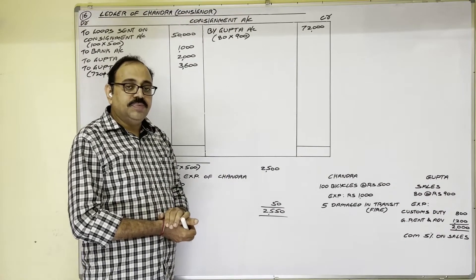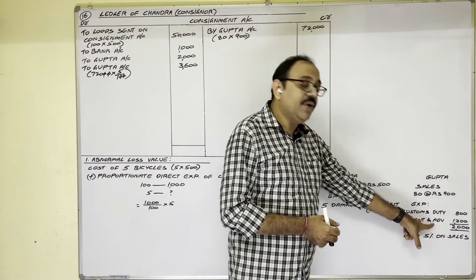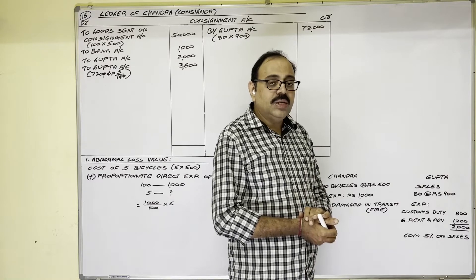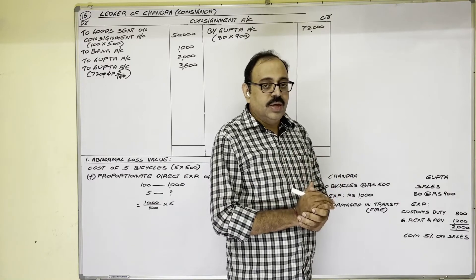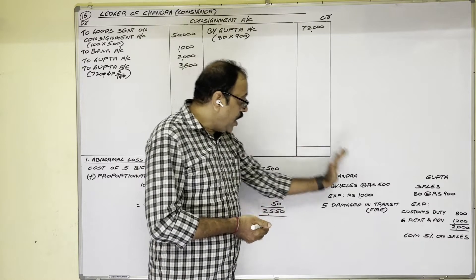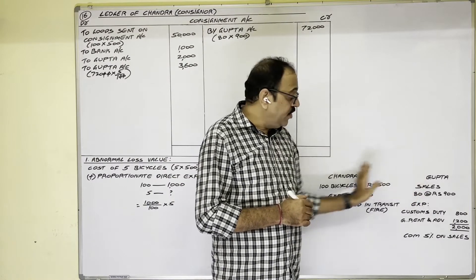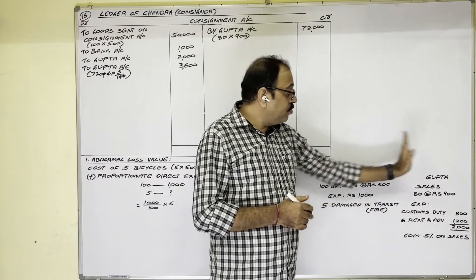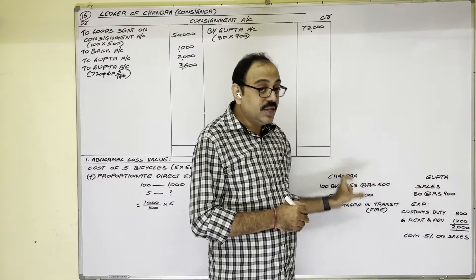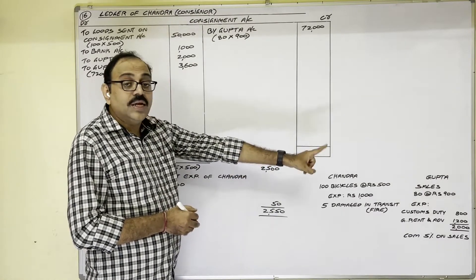Why is consignee's direct expenditure not added to abnormal loss? Because these goods were lost in transit — Gupta received only 95 bicycles. Whatever Gupta spent on customs duty and godown rent was spent on 95 bicycles only, not on these five lost bicycles. That is why consignee's direct expenditure is not considered in the abnormal loss calculation.